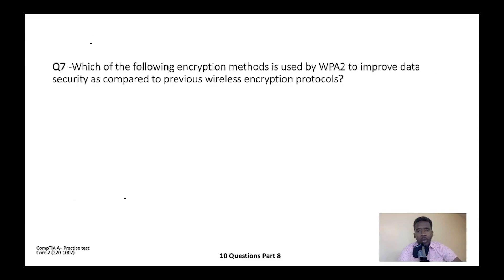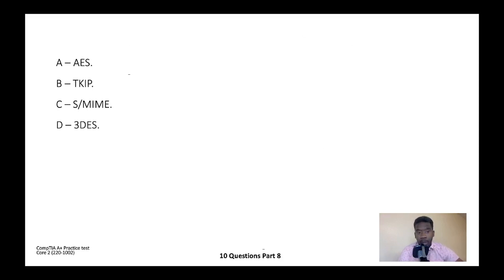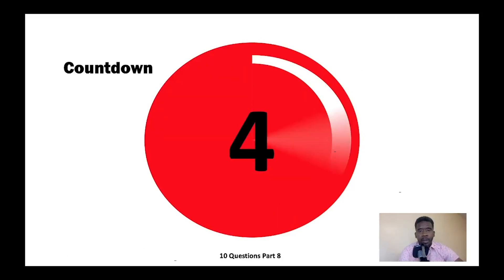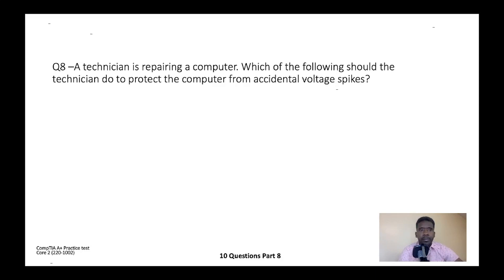Question seven: Which of the following encryption methods is used by WPA2 to improve data security compared to previous wireless encryption protocols? Is it A) AES, B) TKIP, C) S/MIME, or D) 3DES? I remember having that question in Security+ and also in A+. The correct answer is A — AES.